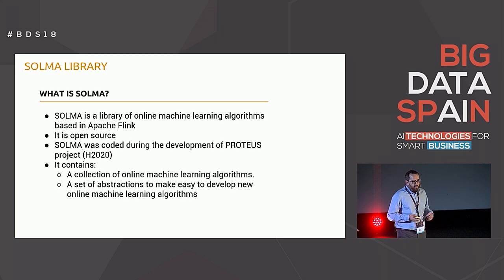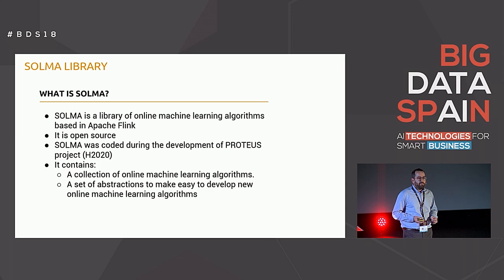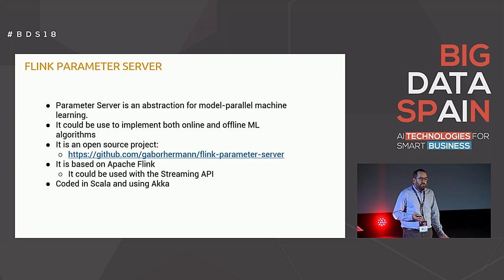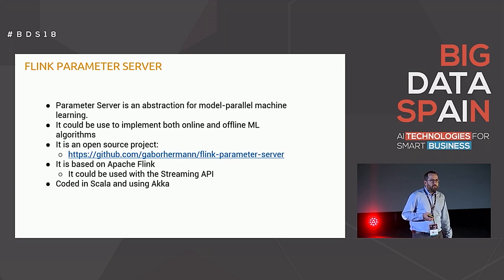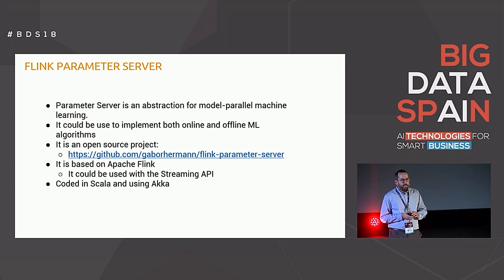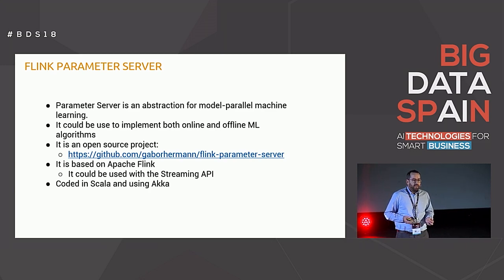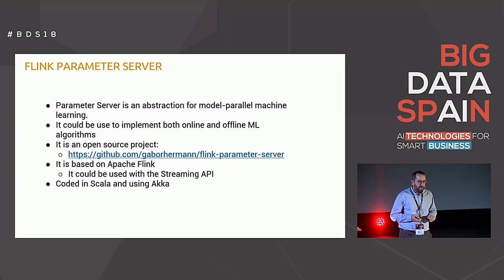Solma has algorithms adapted to this paradigm and solves the parameter server problem using an open-source project called Flink Parameter Server. Flink Parameter Server is an abstraction for model-parallel machine learning and can be integrated into a Flink job. This solution can be integrated into the Flink streaming API.